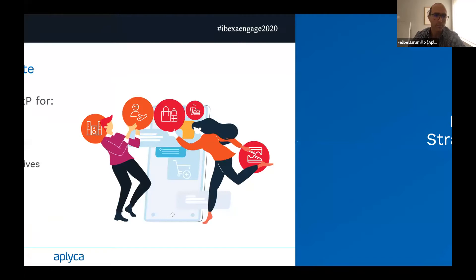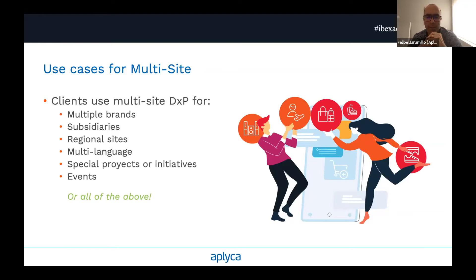First, when do we want to use multi-site? Essentially you use multi-site when you want to host multiple sites on a single platform. This is very common when you have multiple brands, or when you have a group of companies with subsidiaries — you want governance around those sites, leaving subsidiaries freedom to manage their content, but also maintaining closer control over the platform, over security, and over performance.